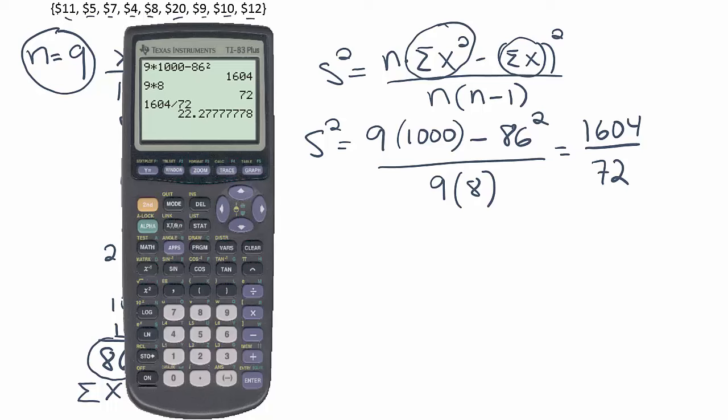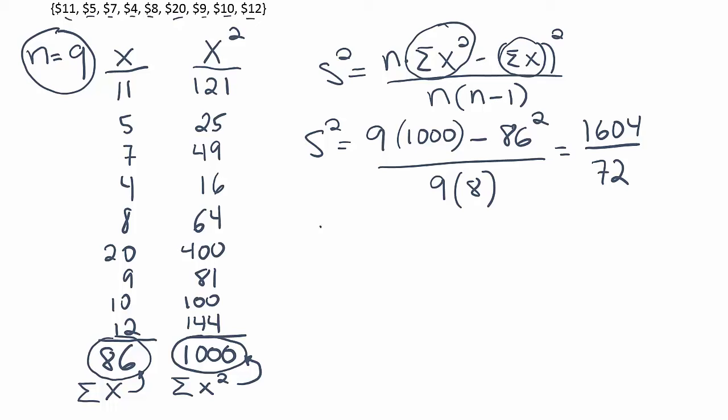However, since we're going to use this value down the road, I'm not going to actually round it off. So I'm going to say s squared is equal to 22.2777777, so on and so forth, right? And then that's our variance. Now you could round it off for the variance. You could round it off to 22.28 or 22.278, whatever you want.